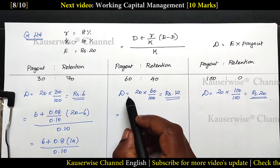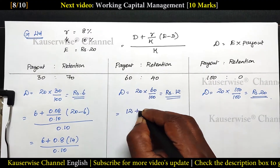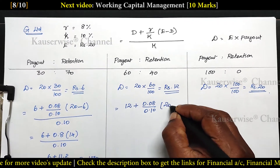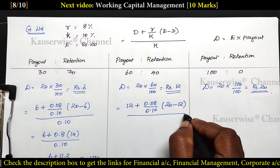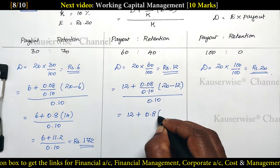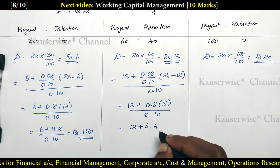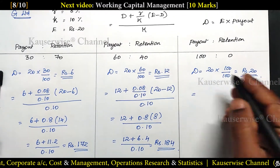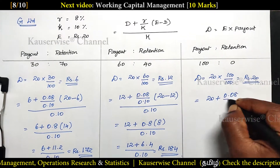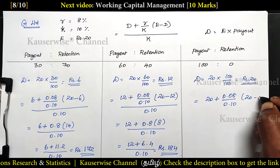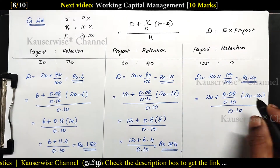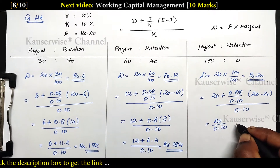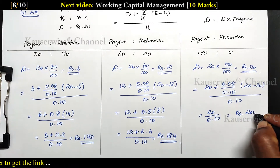For the second case, D is 12 rupees: 12 plus 0.08 divided by 0.10 into 20 minus 12, divided by 0.10, giving 184 rupees. For the third case, D is 20 rupees: 20 plus 0.08 divided by 0.10 into 20 minus 20, divided by 0.10. Since 20 minus 20 equals 0, you will have only 20 divided by 0.10, giving 200 rupees.